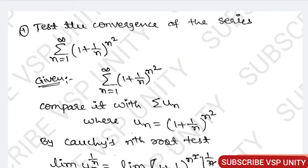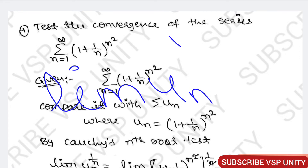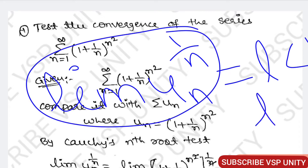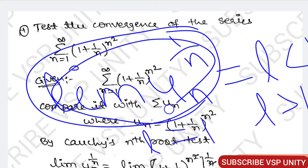What is Cauchy's root test? If the limit as n tends to infinity of u_n to the power of 1/n equals l: if l is less than 1, the given series is convergent; if l is greater than 1, the given series is divergent; if l equals 1, then the test fails.